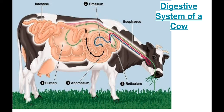I want to draw your attention to the fact that our digestive system is very different from other animals, especially from herbivores — animals that graze and eat plants. A very important example is the cow and its digestive system.